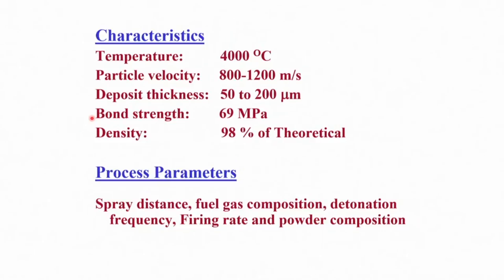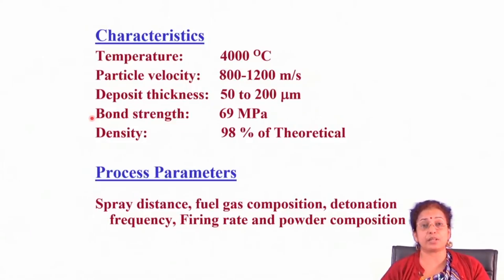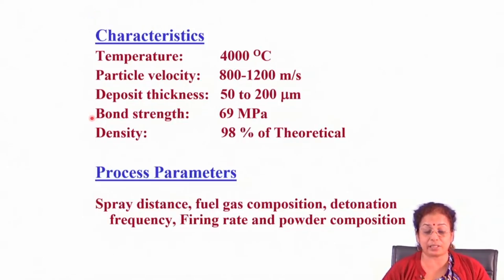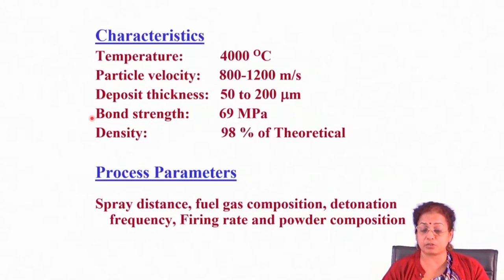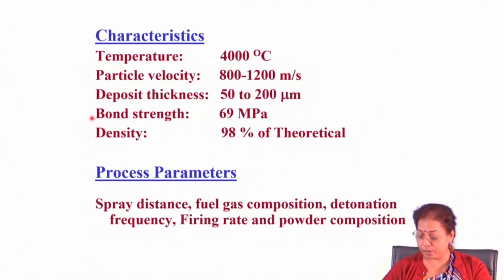Process parameters for detonation gun spraying include fuel gas composition, detonation frequency, firing rate, and powder composition. The firing rate is particularly important here because ignition happens in a very small area inside the chamber, so the ignition zone is small compared to conventional techniques, and very small powder quantities are used for the coating.